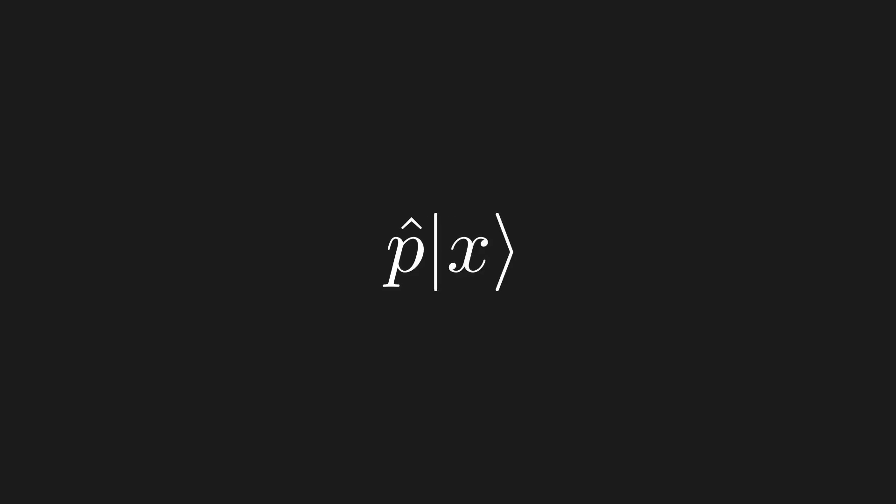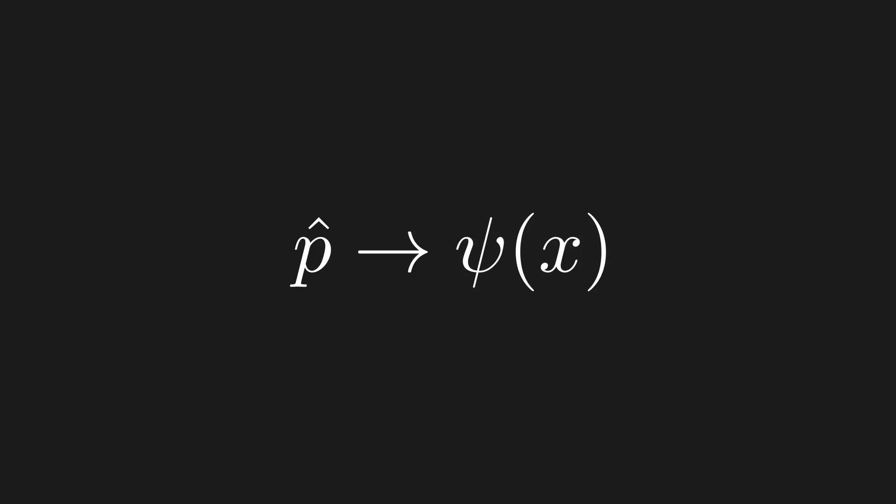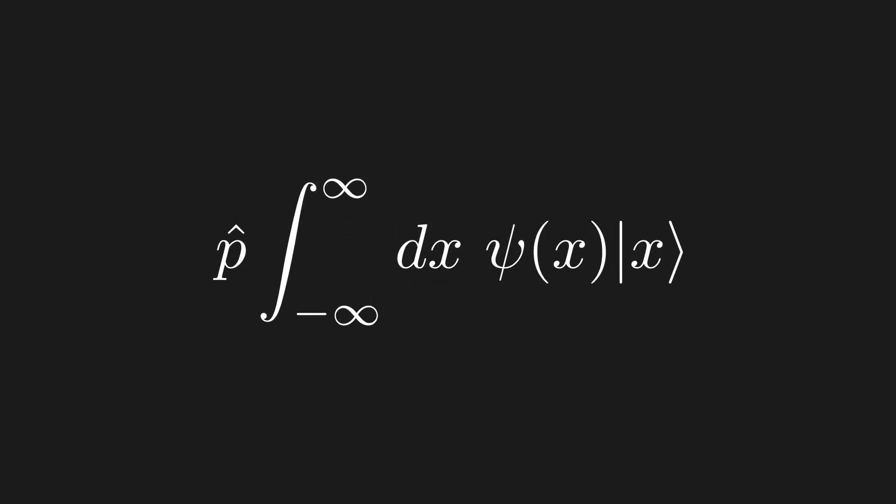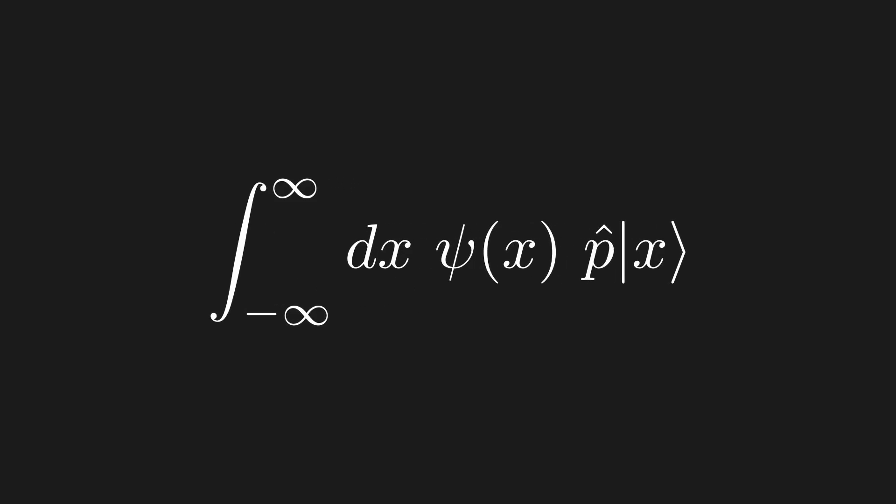Now let's discuss the momentum operator in more detail. We found the action of the momentum operator on a position ket, but I want to know what it does to the position wave function. To do this, let's act the momentum operator on a quantum state, then expand that quantum state in the position eigenbasis. We can move the momentum operator into the integral, and since the wave function is just the scalar coefficient in this infinite linear combination, we can pass the momentum operator onto the position ket. Using what we just derived, the action of the momentum operator on a position ket equals iħ times the position derivative.